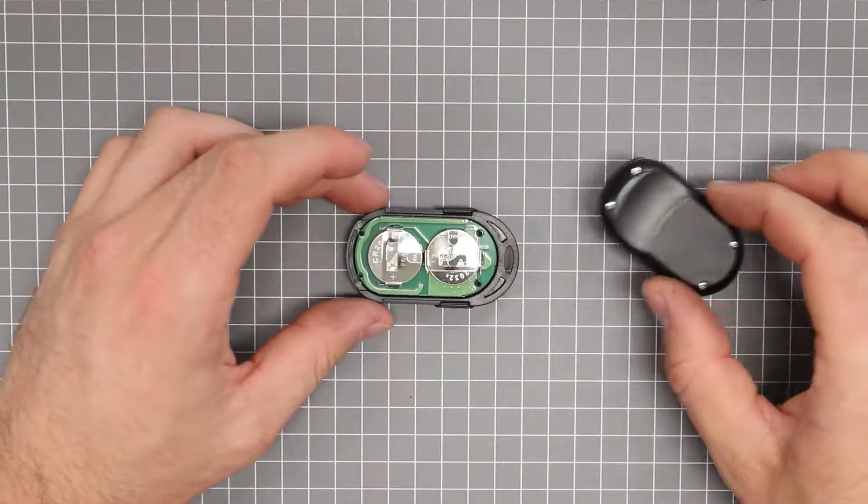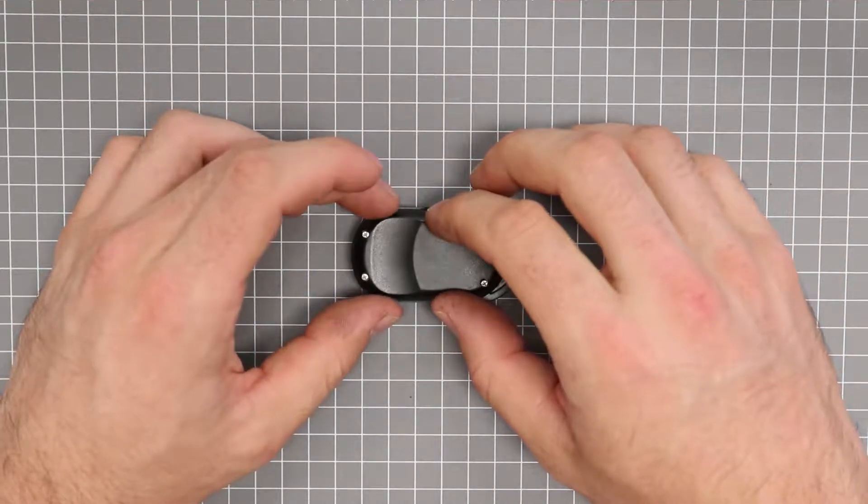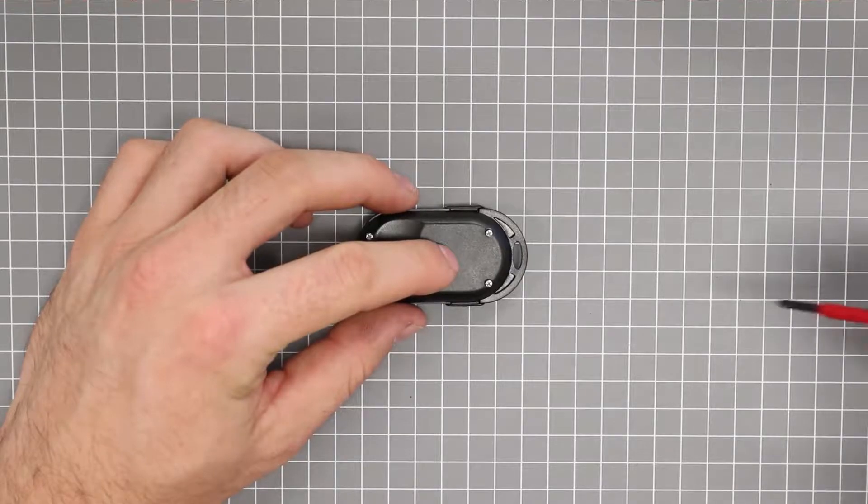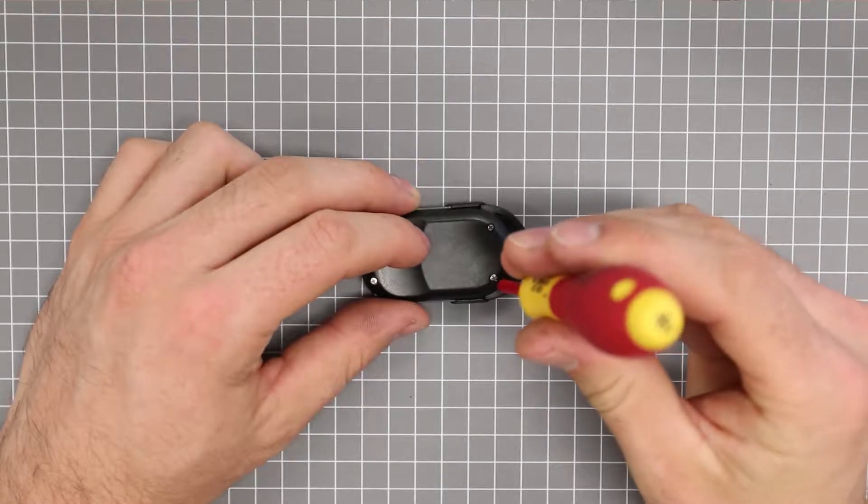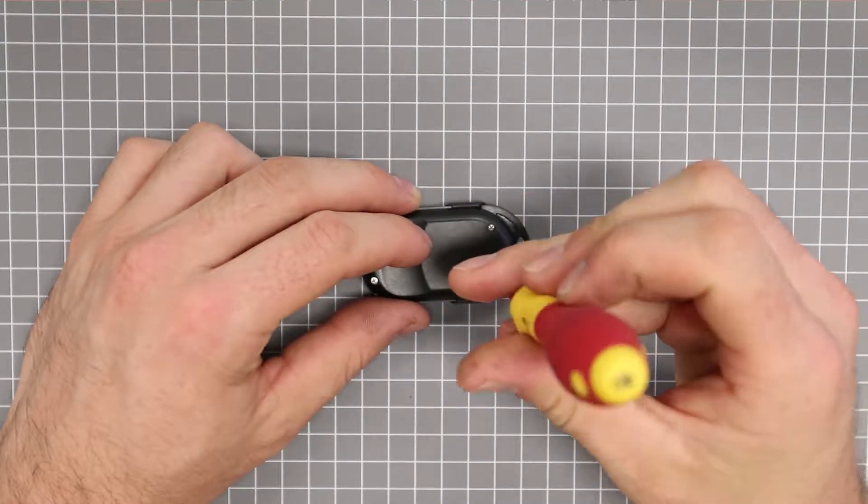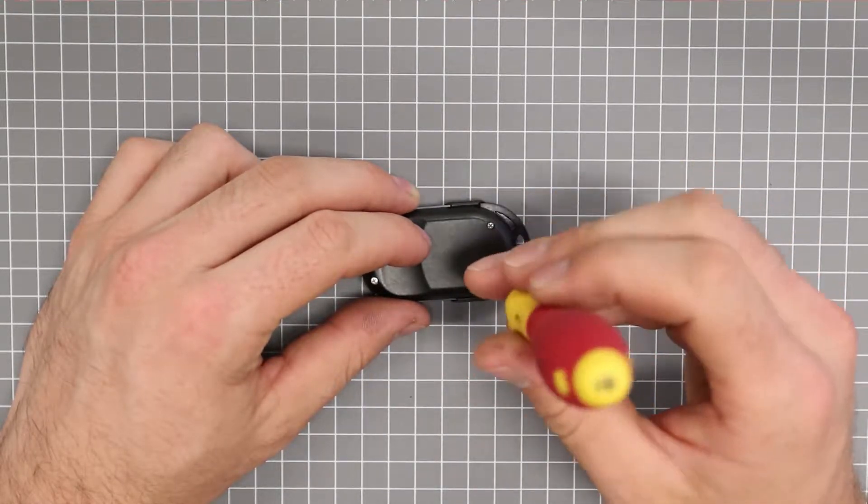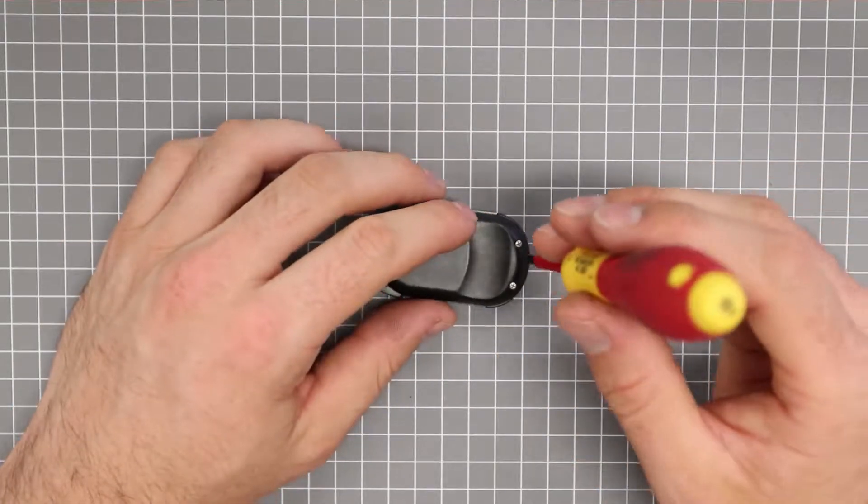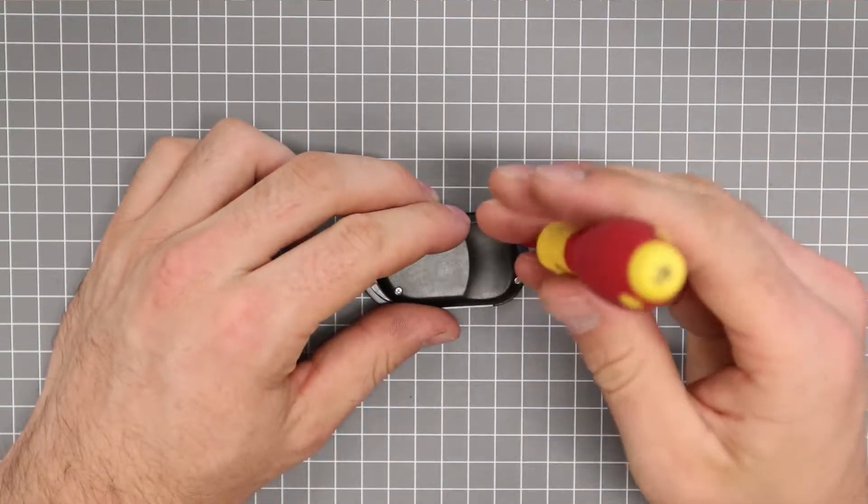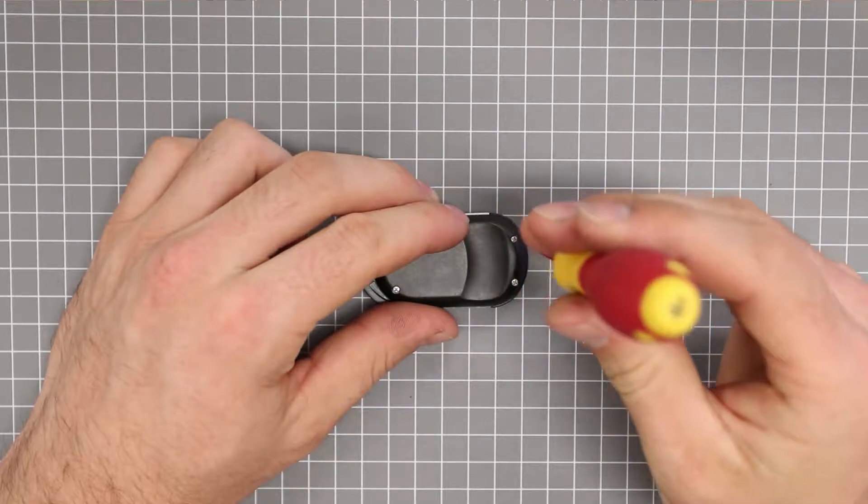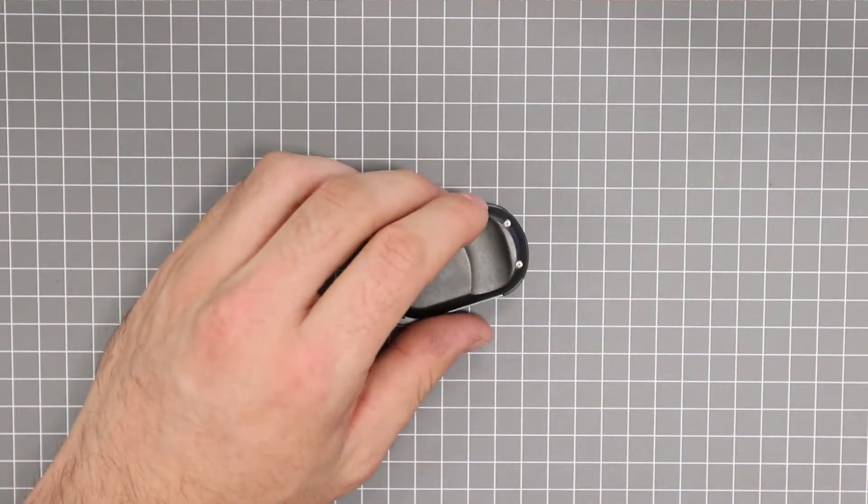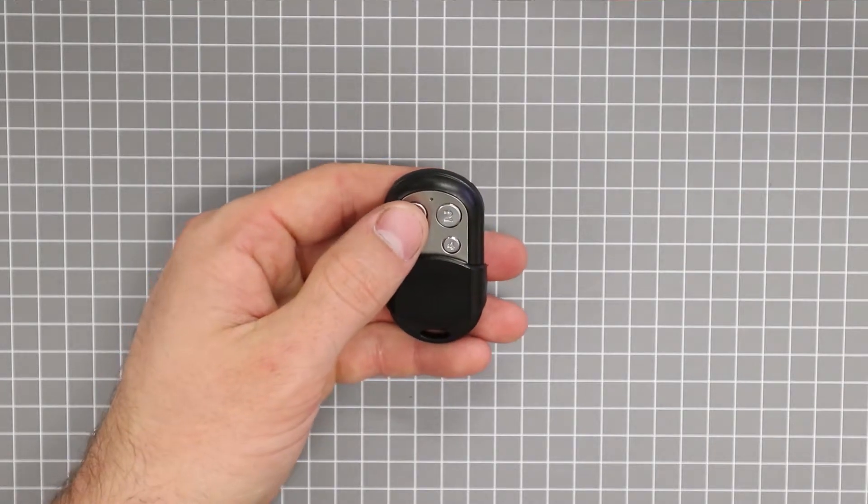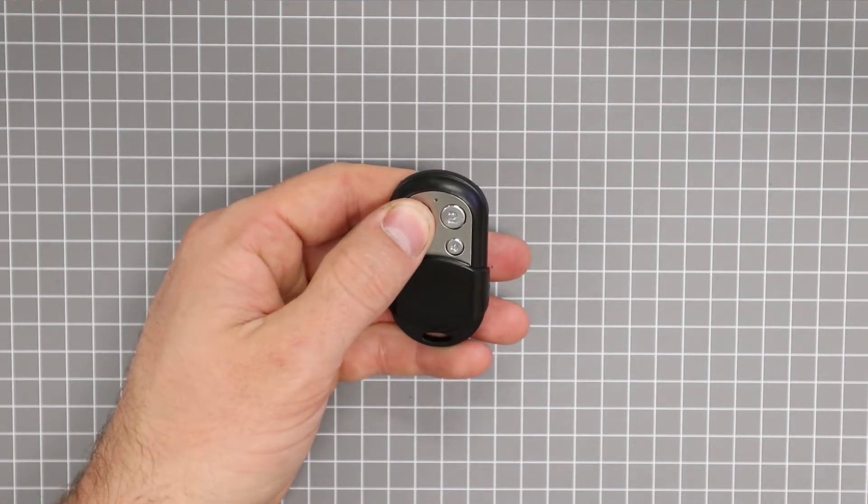Replace the rear cover and tighten up the four screws making sure not to over tighten them. Please make sure to test the functionality of the remote after you have completed the battery change.